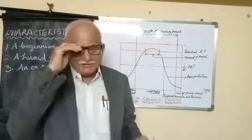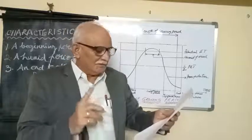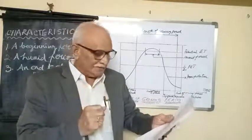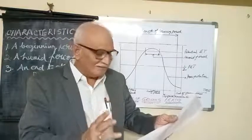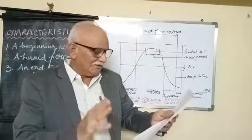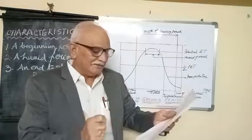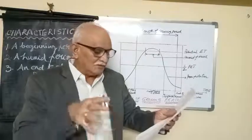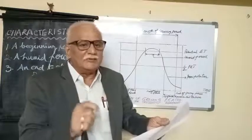By definition, according to FAO, the length of the growing period is the period in days during the year when the average temperatures are greater than or equal to 5 degrees centigrade, and precipitation plus moisture stored in the soil exceed at least half of the potential evapotranspiration.